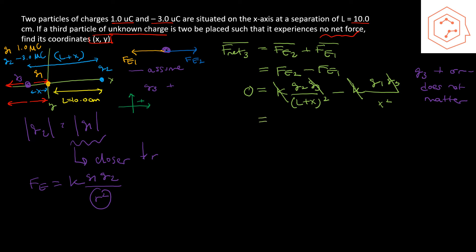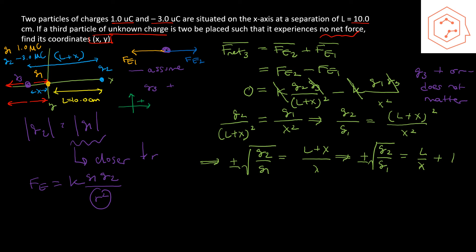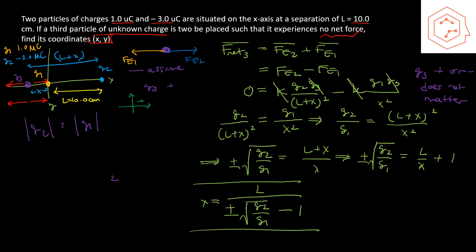Continuing with the equation, we rearrange to get |q2|/(l+x)² = |q1|/x². Cross-multiplying: |q2|/|q1| = (l+x)²/x². Taking the square root of both sides gives positive and negative roots: √(|q2|/|q1|) = (l+x)/x. Splitting the fraction: √(|q2|/|q1|) = l/x + 1. Solving for x gives x = l / (±√(|q2|/|q1|) − 1).